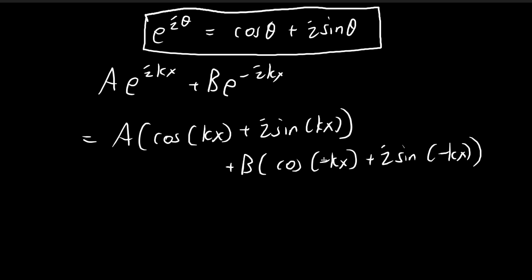Cosine negative kx just becomes cosine kx because cosine negative theta is equal to cosine theta. And then sine negative kx, I can rewrite this by moving the negative sign on the outside, because sine negative theta is equal to negative sine theta.